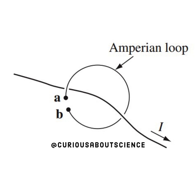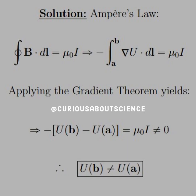All right, so let's draw it out. You see we have a wire here and an Amperian loop from A to B. So let's apply Ampere's law.